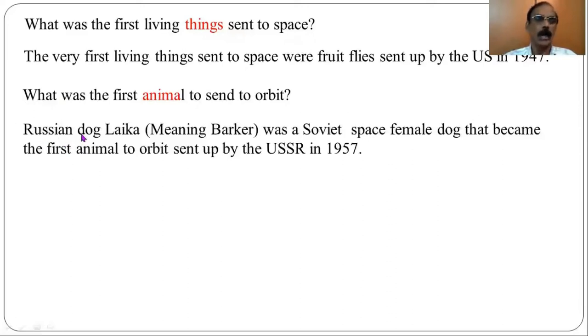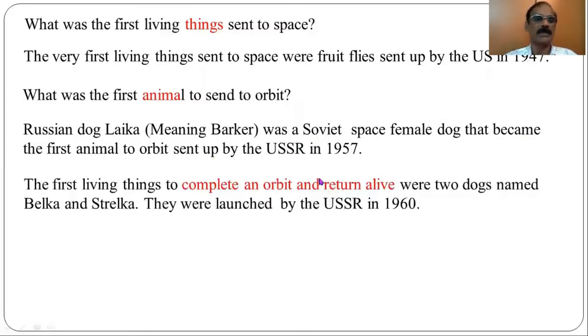Russian dog, namely Laika, was a Soviet space female dog that became the first animal to orbit sent up by Soviet Russia in 1947. The first living things to complete an orbit and return alive were two dogs named Belka and Strelka.